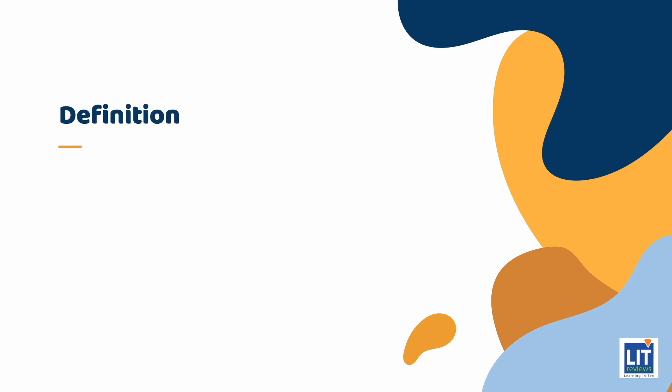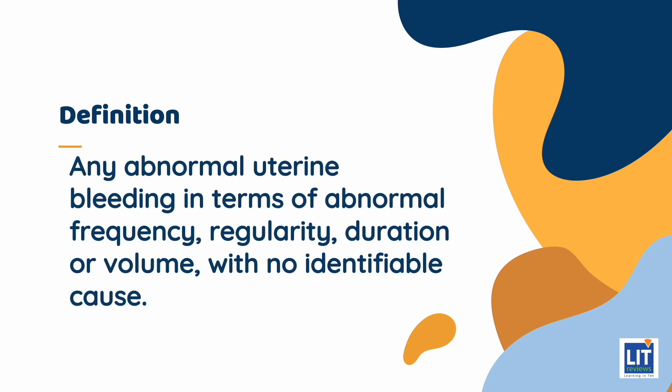Abnormal uterine bleeding, idiopathic, was previously termed as dysfunctional uterine bleeding, or DUB. It is defined as any abnormal uterine bleeding in terms of abnormal frequency, regularity, duration, or volume with no identifiable cause.